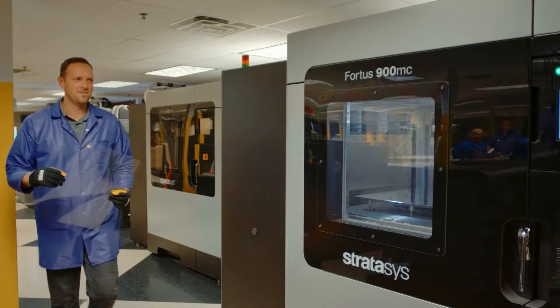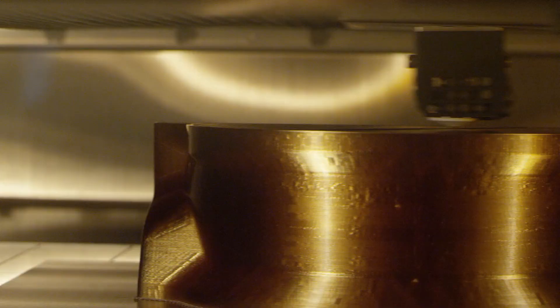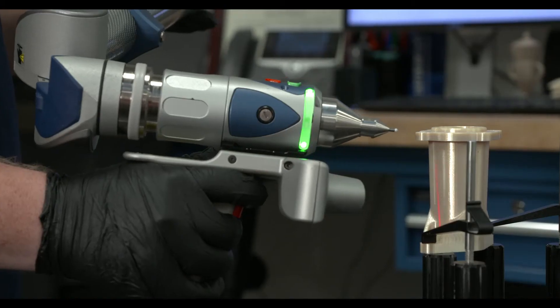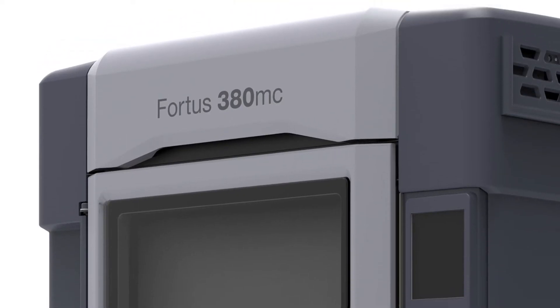Accuracy is a priority when it comes to inspection fixtures because inspection is all about accuracy. Stratasys FDM printers are known for their reliability and dimensional accuracy, especially the 380 and the 450.